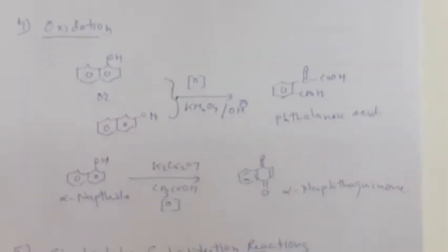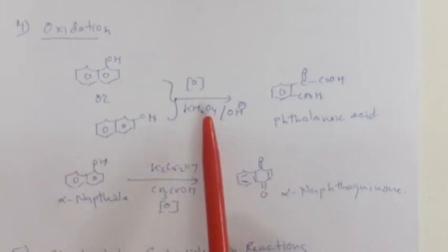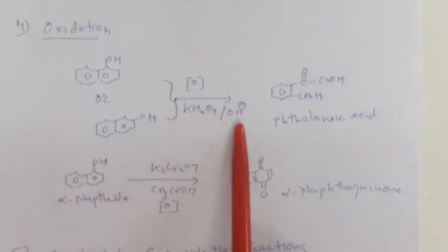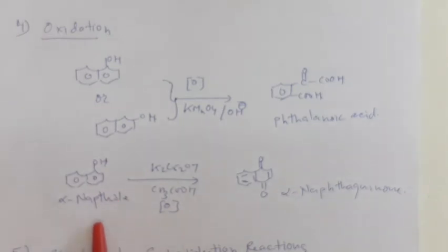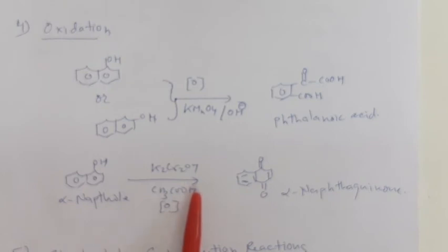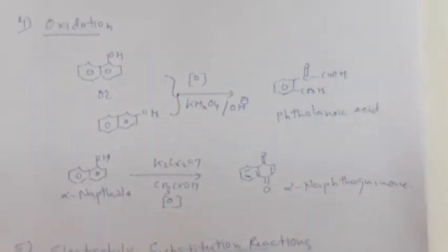The oxidation of alpha or beta naphthol: in the presence of KMnO₄ in the presence of base, it gives thalic acid (phthalic acid). If alpha or beta naphthol reacts with potassium dichromate or chromic acid, then it gives alpha naphthaquinone. So these are the oxidation reactions of alpha or beta naphthol.